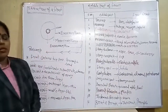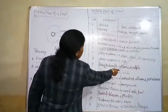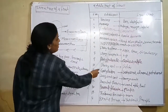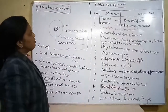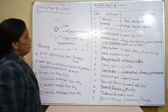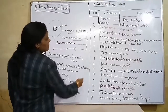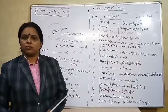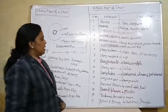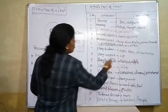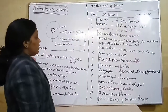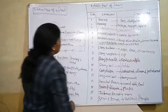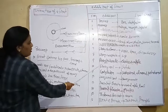The next edible part is juicy placental hair. In citrus fruit there are a lot of juicy placental hairs that are the edible part. The next one is fleshy thalamus — fleshy thalamus is consumed in all sorts of false fruits like apple, pear, and strawberry.